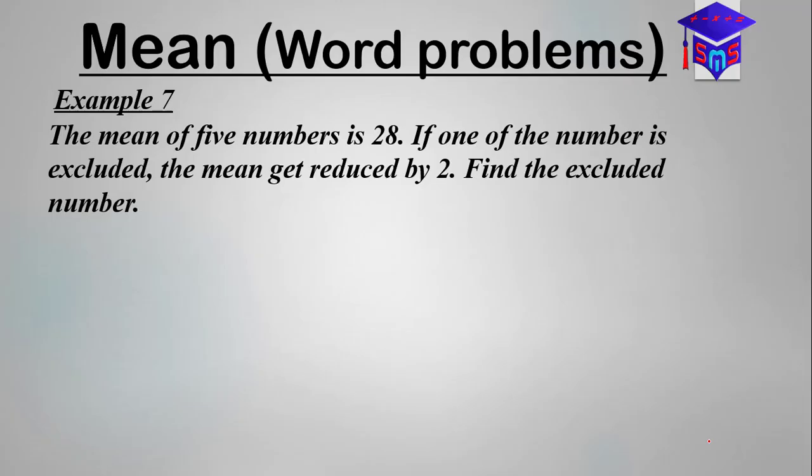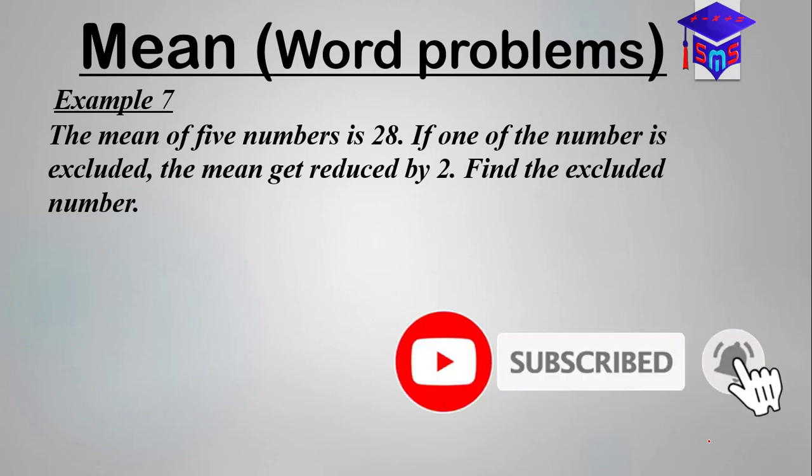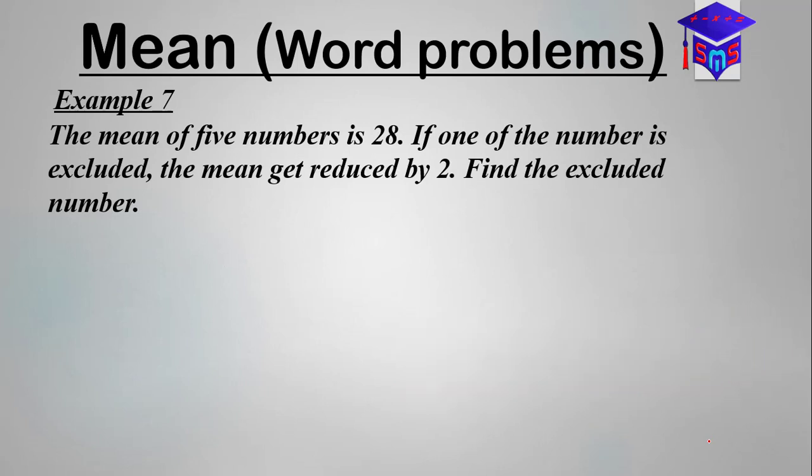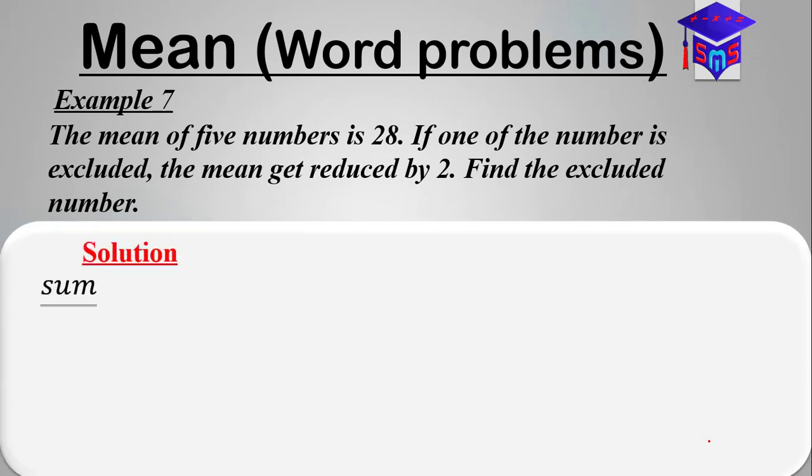All right, we are back again to look at this question. This question says the mean of five numbers is 28. If one of the numbers is excluded, the mean gets reduced by 2. Find the excluded number.